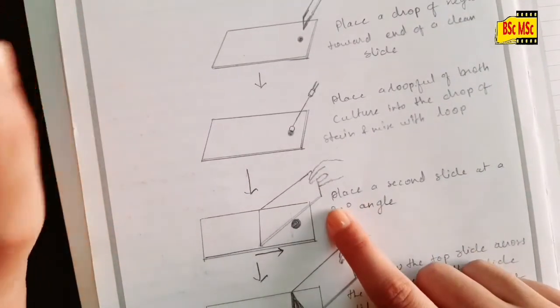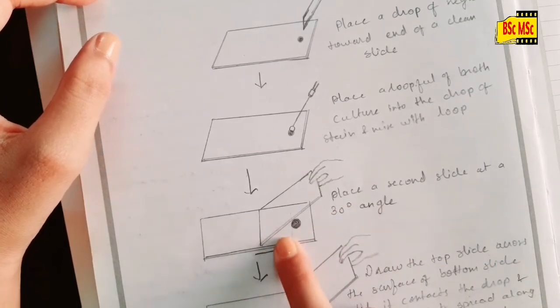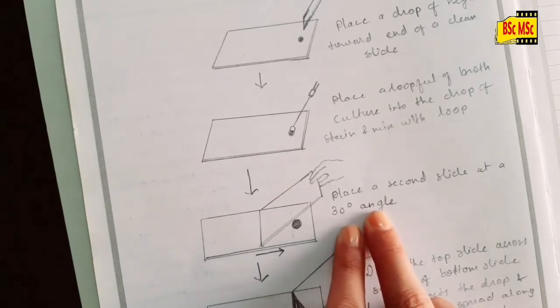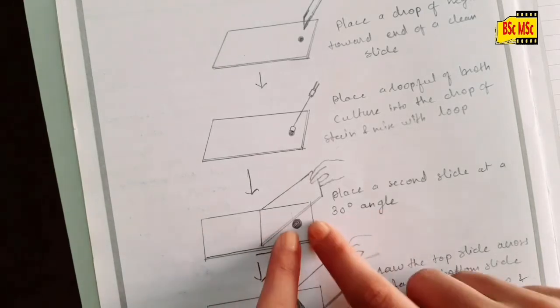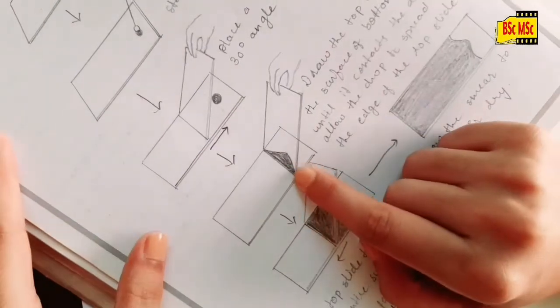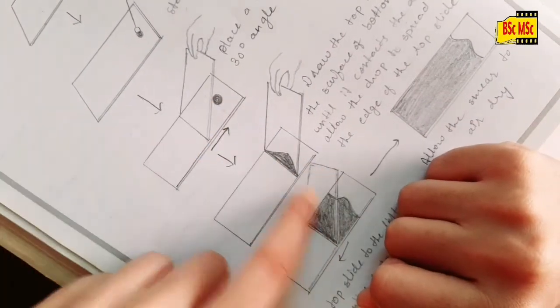Then, take another clean slide and place it like this. See, this image is showing placing it at 30-degree angle near the drop. In the second picture you'll be able to see - like this. When you place it near the drop, the drop instantly spreads.